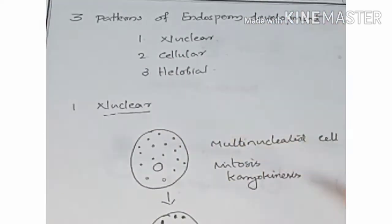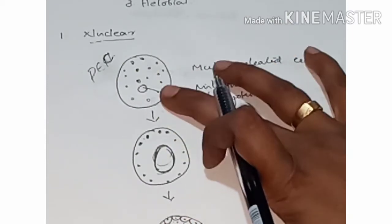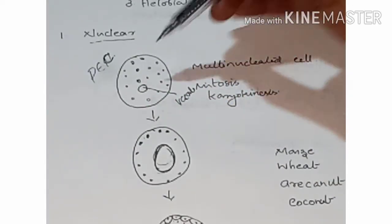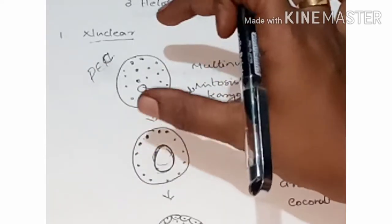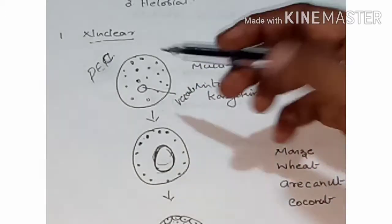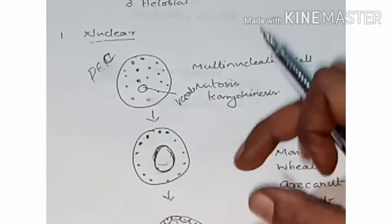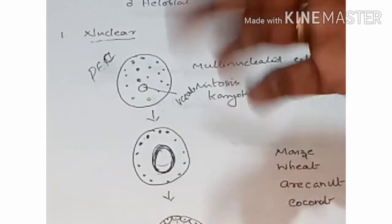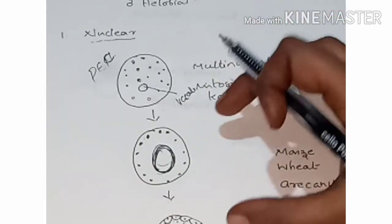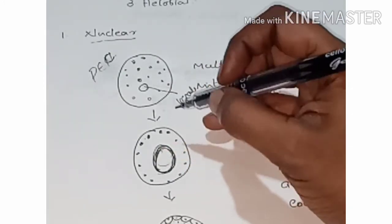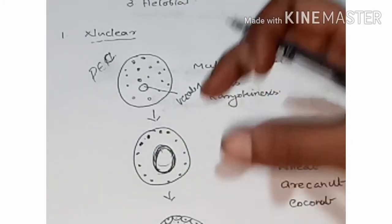In nuclear endosperm development, the primary endosperm cell commences mitosis. Karyokinesis divides the nucleus without cytokinesis, forming a large vacuole. The primary endosperm cell enlarges by expansion of the central vacuole, and many nuclei are formed by free nuclear division in the peripheral cytoplasm.